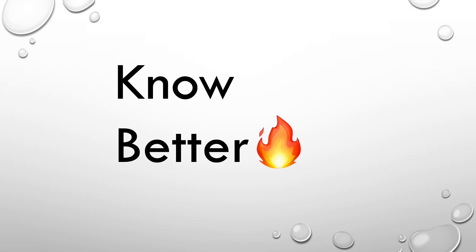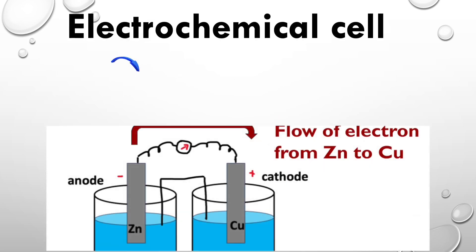In electrochemical cell, the flow of electron from zinc to copper is considered spontaneous because in reactivity series, zinc is in upper position than copper. So this reaction is considered as feasible.